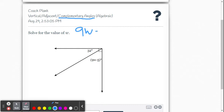9W minus 5, that's this angle here, plus the 32, that's this angle here, has to equal the total, which is 90 degrees, which is that right angle right here. All right angles are 90 degrees.